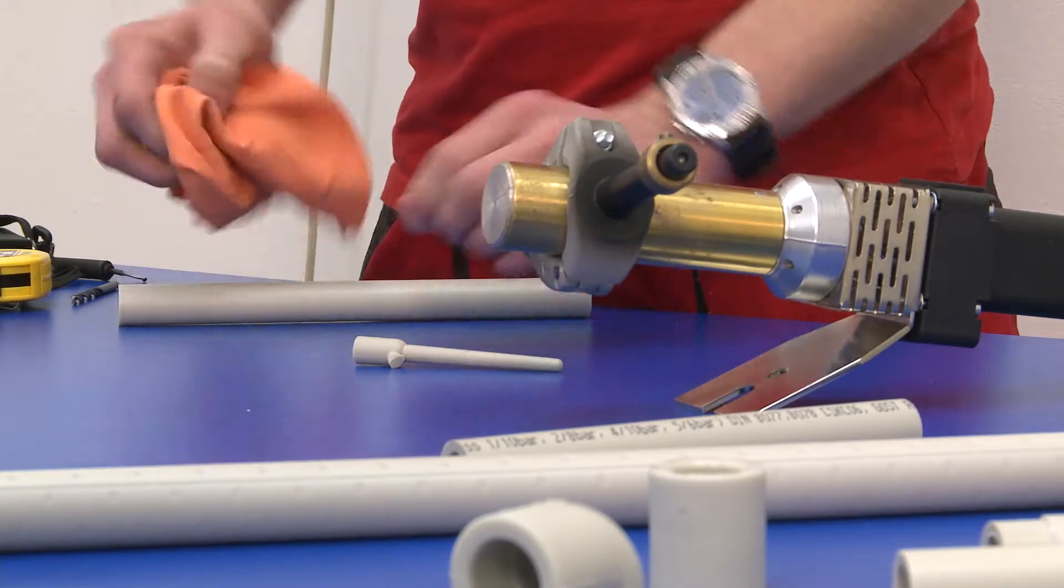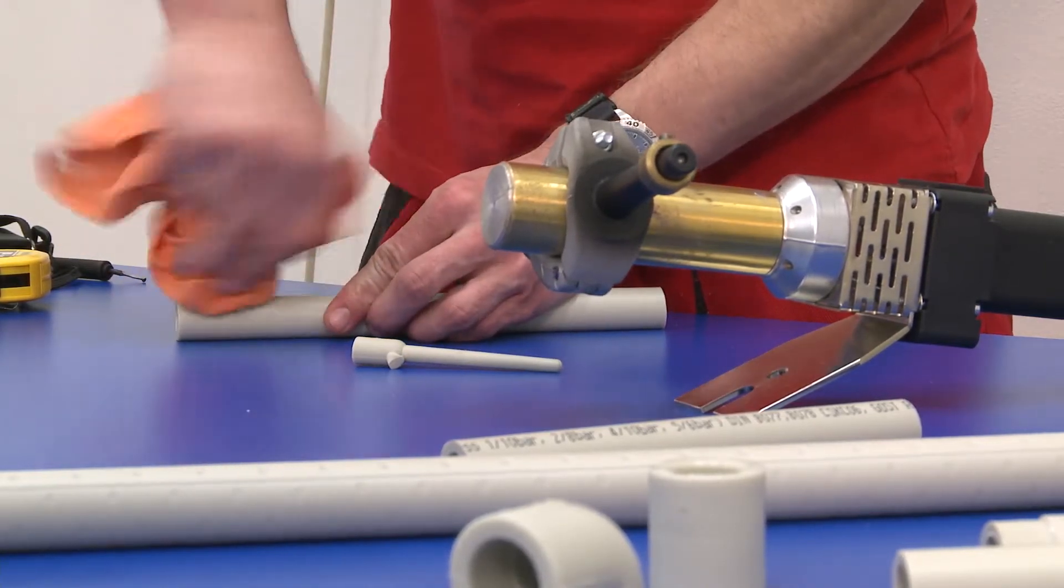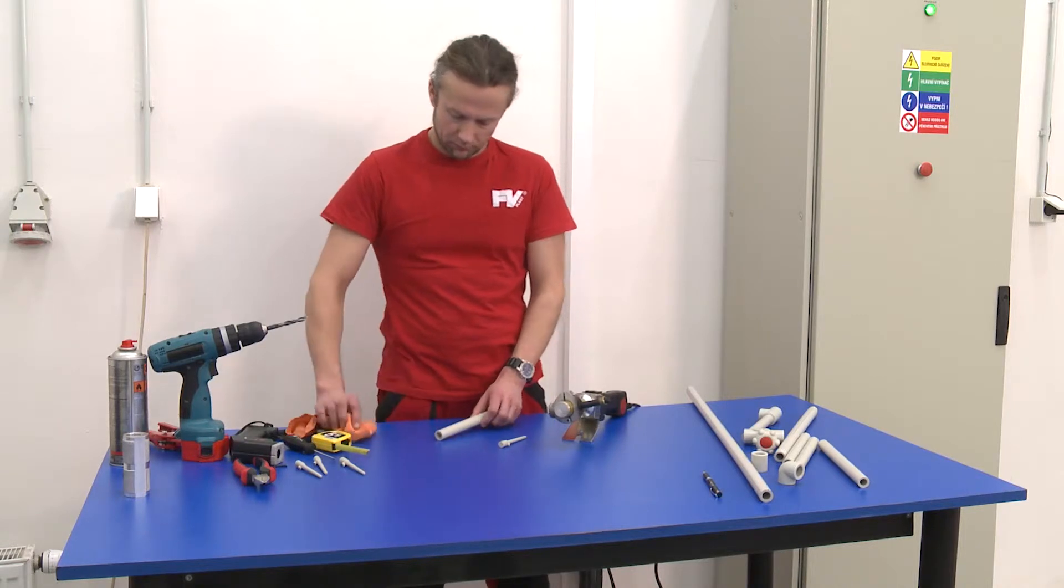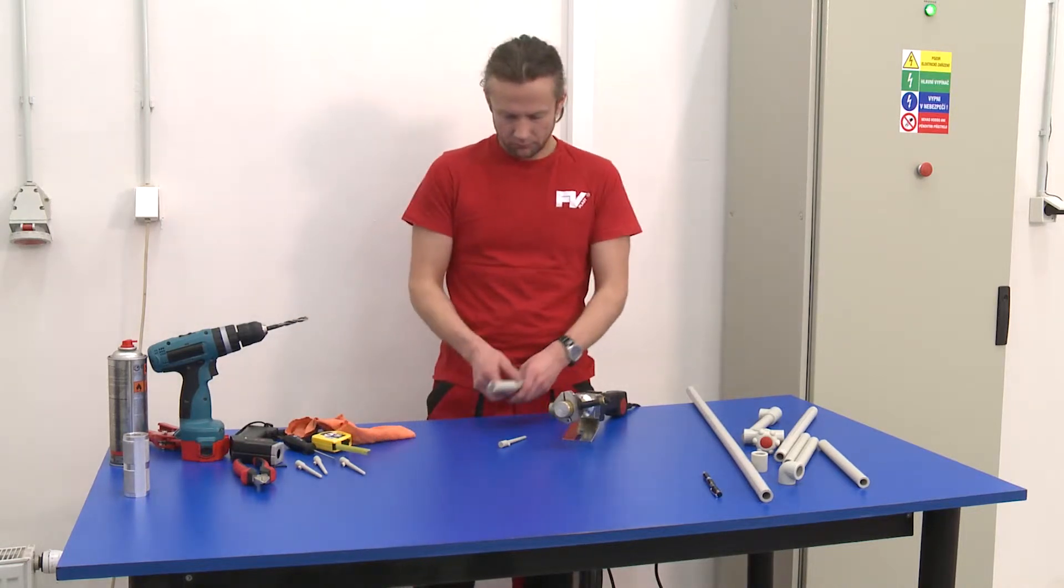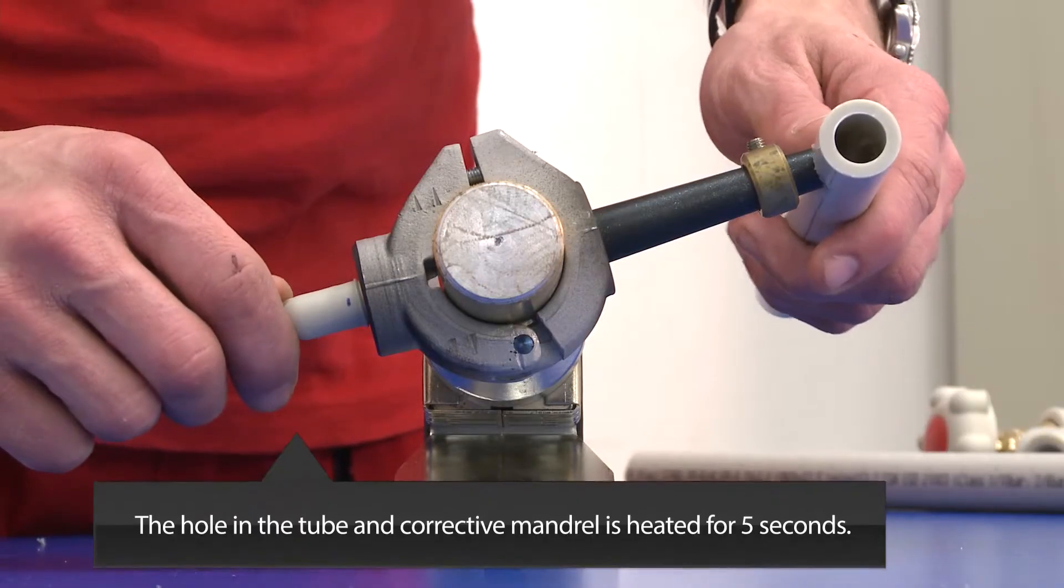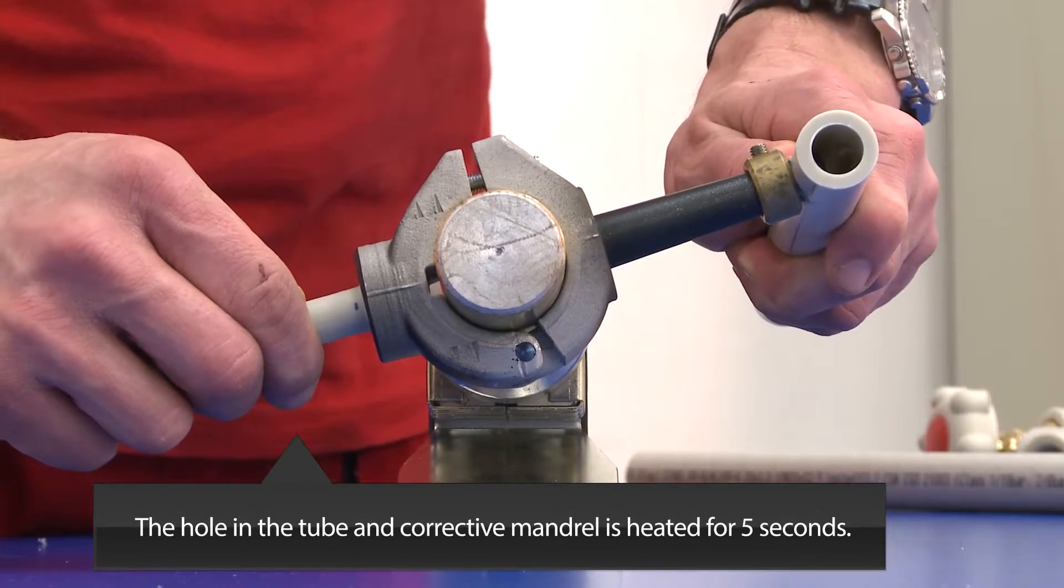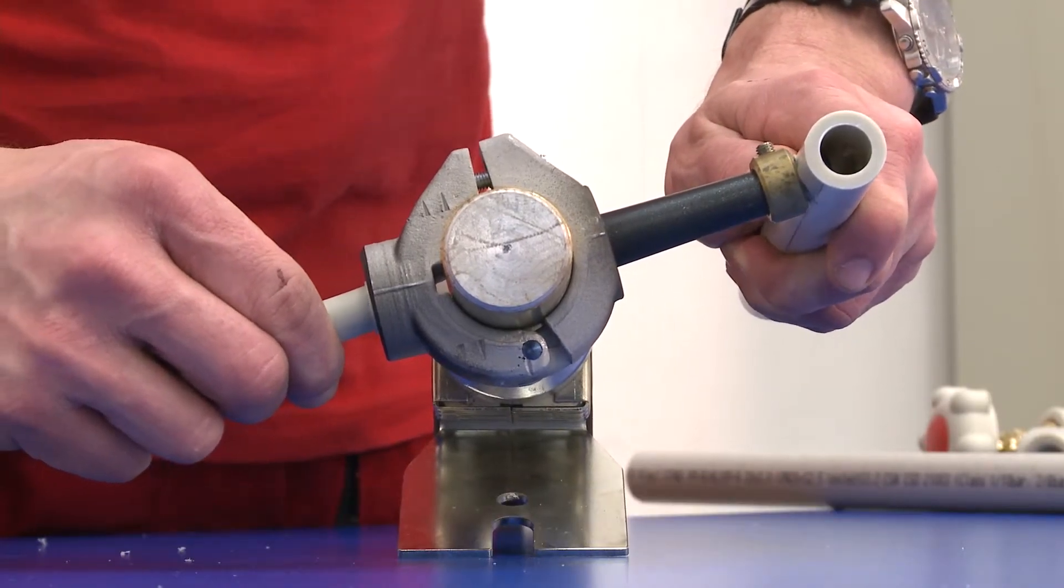When working it is very important that the contact surfaces of the corrective mandrel and the hole are dry and free of grease. The hole in the tube and the corrective mandrel are warmed up simultaneously for five seconds to create a melting collar as during normal polyfusion welding.